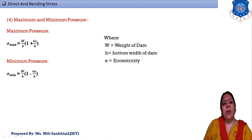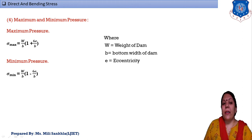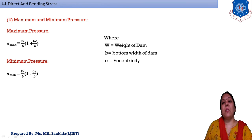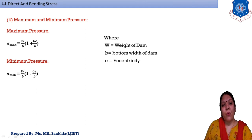Finally, sigma maximum = (W/b) × [1 + (6e/b)], and sigma minimum = (W/b) × [1 − (6e/b)], where 'b' = bottom width and 'e' = eccentricity. Note: in these formulas, 'W' is the weight of the dam — not the density of water — calculated as [(a + b)/2] × H × density.